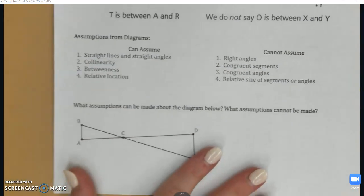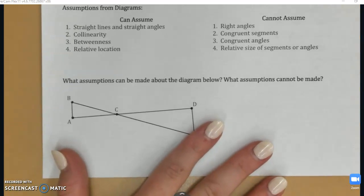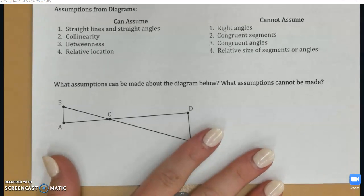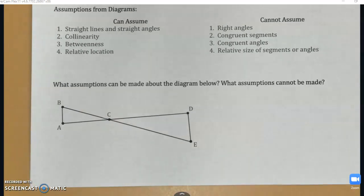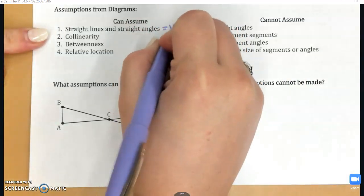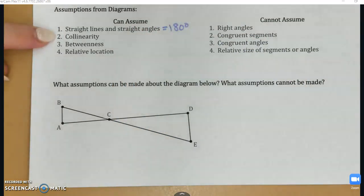Okay, our last conceptual piece of information today is on assumptions. So when you're given a diagram, there are things that are safe to assume without being told. And there are things that you cannot assume without being told otherwise first. We have our list of each here. Things you can assume: straight lines and straight angles. And remember, straight angles are equal to 180 degrees. Collinearity, betweenness, and again, they can only be between each other if they're collinear, and relative location. These are all safe to assume.